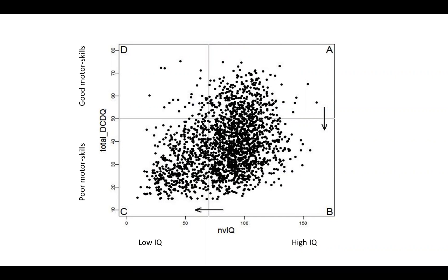On the y-axis we plot the non-verbal IQ discussed before. When we plot all kids in the SSC collection measured on both these measures, we see a non-linear dependence. The non-linearity is most drastically represented by the fact that there are no kids with low IQ and high motor skills values — that quadrant is heavily depopulated. Kids in quadrant A have high IQ and high motor skills. Kids that keep a high IQ but have decreased motor skills form another group, and further there are kids with low IQ and lower motor skills.